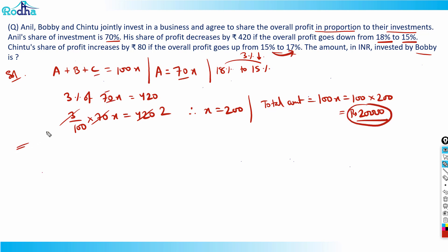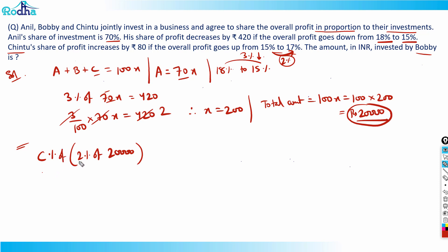Now let's look at Chintu. Chintu's share of profit increases by ₹80 if the overall profit goes up from 15% to 17%, a 2% increase. Let Chintu's share of investment be c%. The overall profit increases by 2% on ₹20,000, and Chintu's portion of that increase is c%, which equals ₹80.